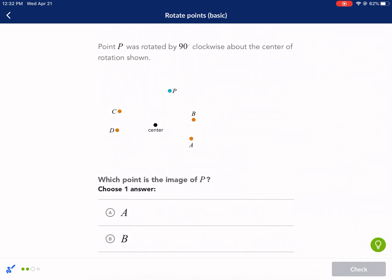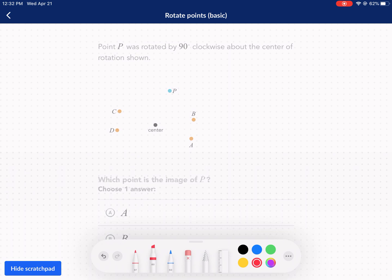Rotated 90 degrees clockwise about the center of rotation. This one, we have the 90. That's easy to do, so we're just going to go 90 degrees clockwise. Here's our center. Here's point P. We're going to connect the two.